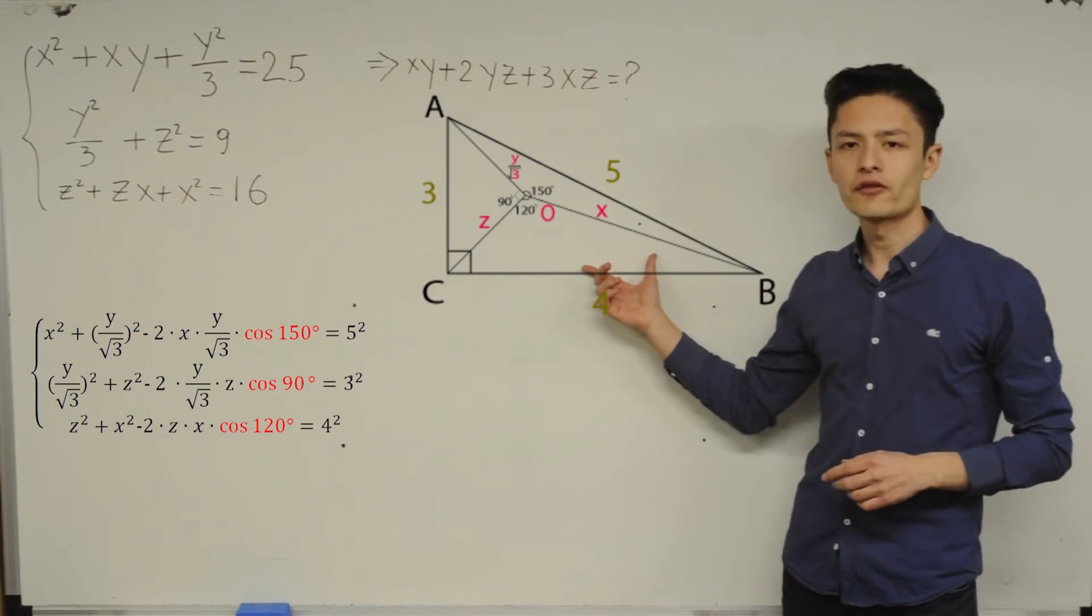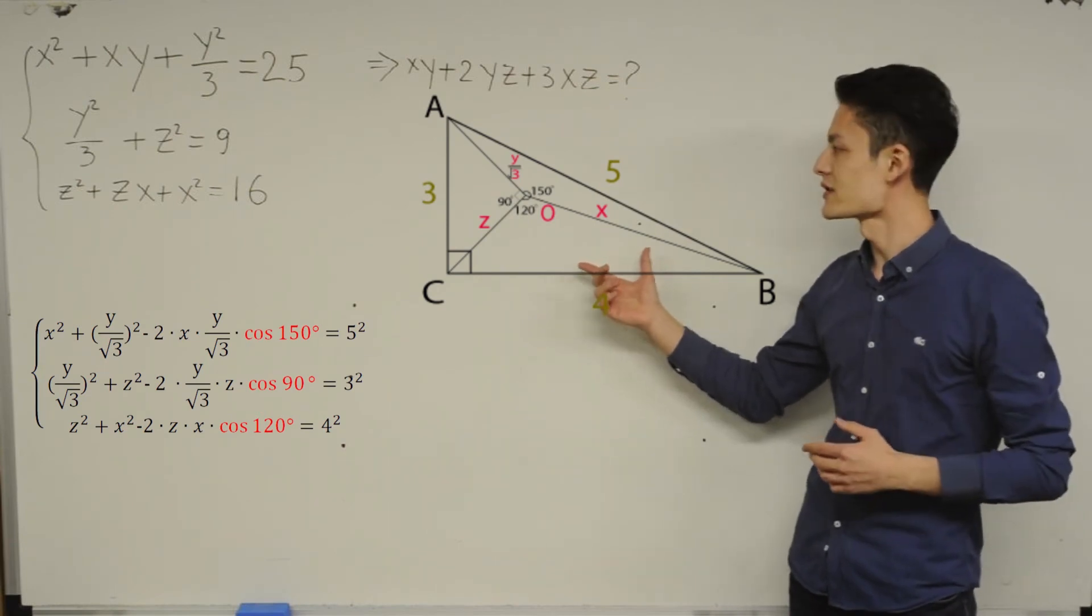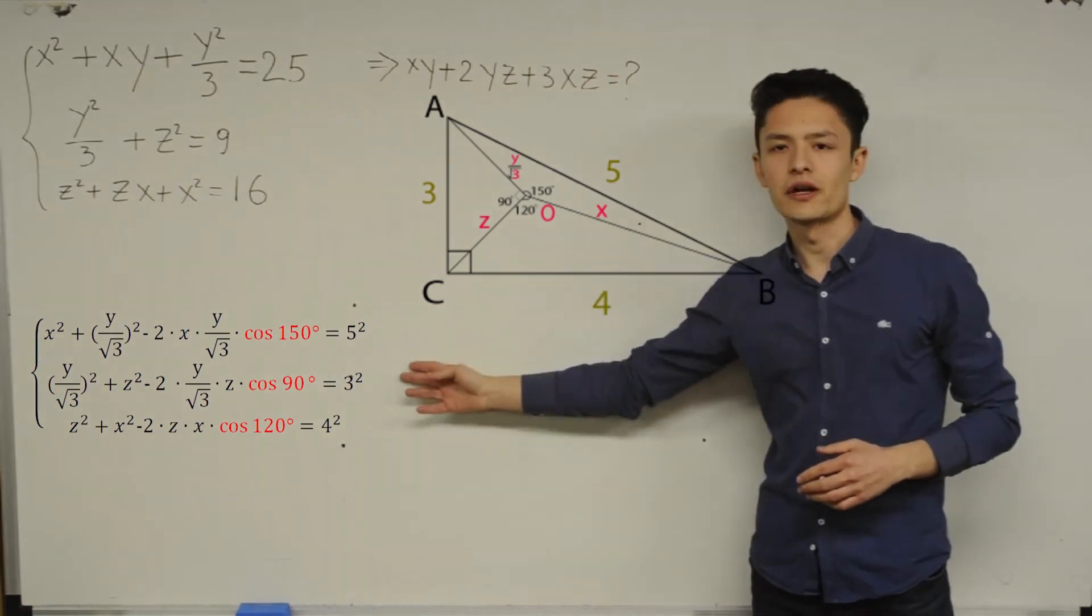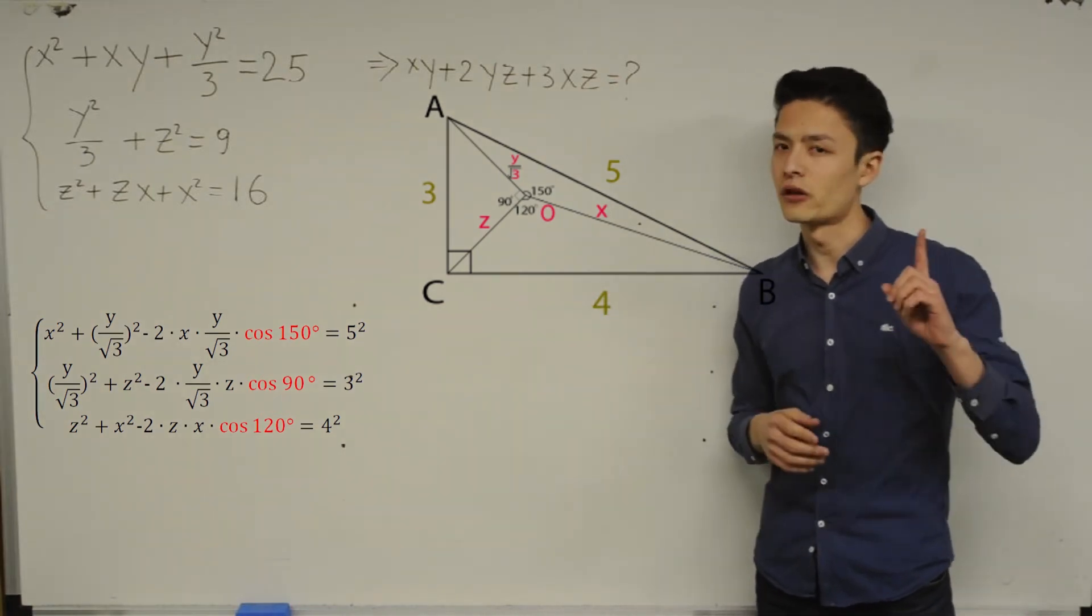And of course, as you might have guessed, if you use the law of cosine for these small triangles, AOB, BOC, and then AOC, you are going to have these 3 equations by using the law of cosine.